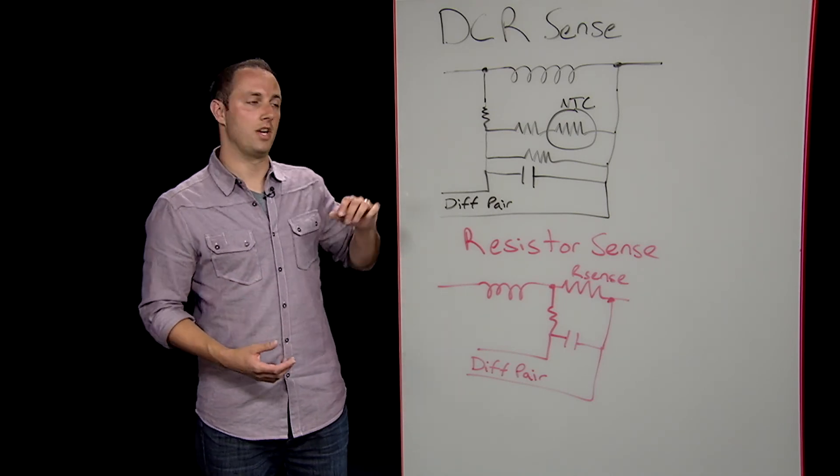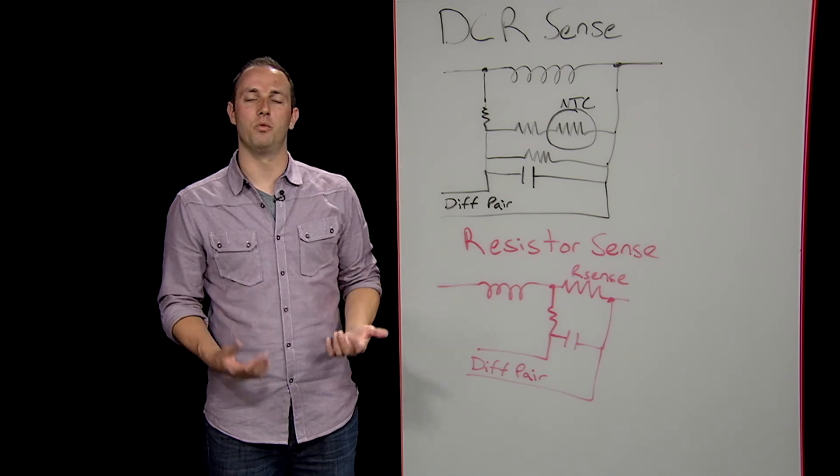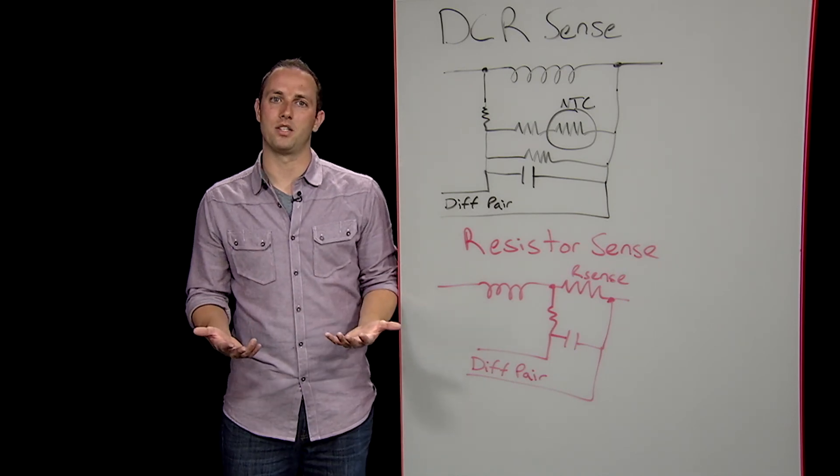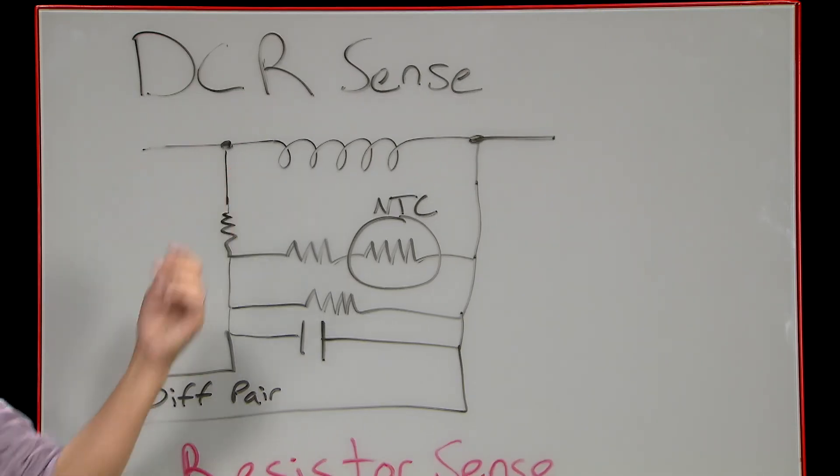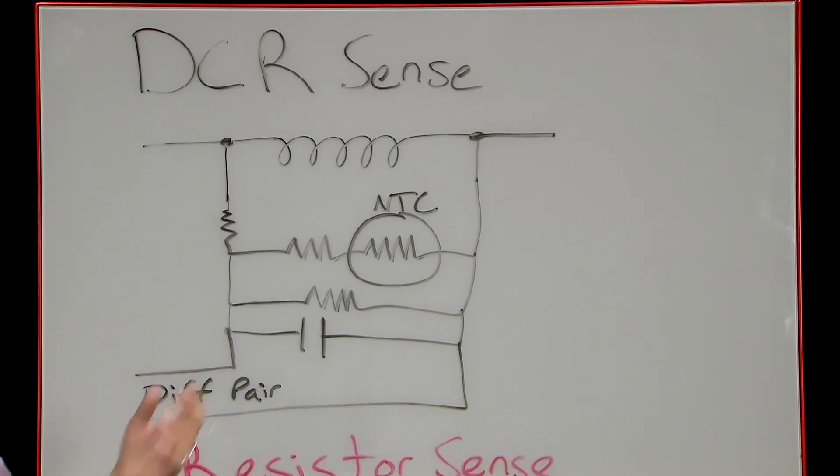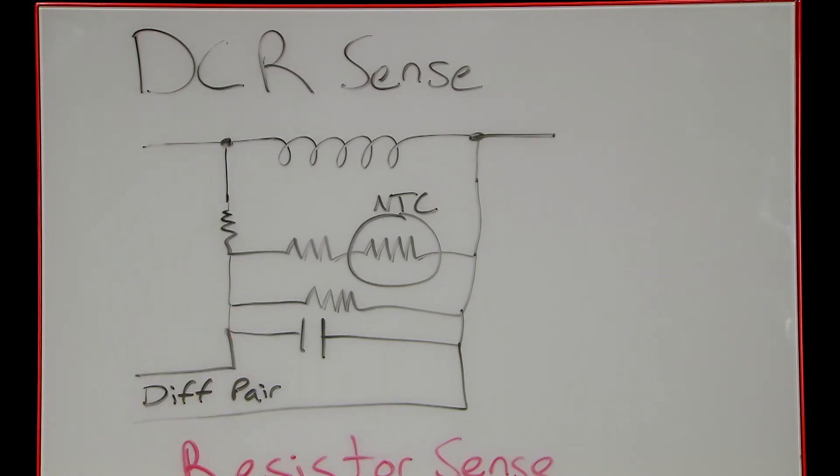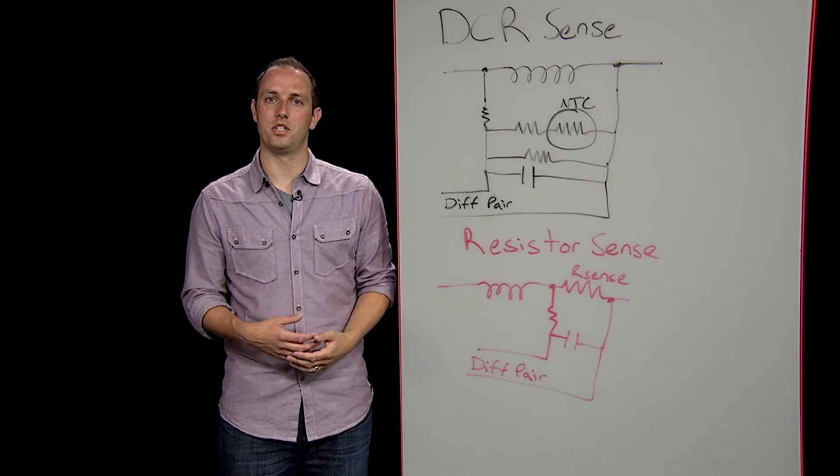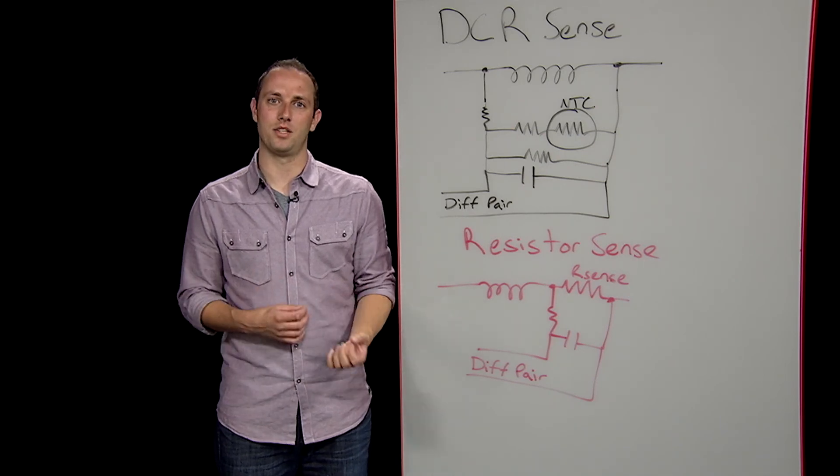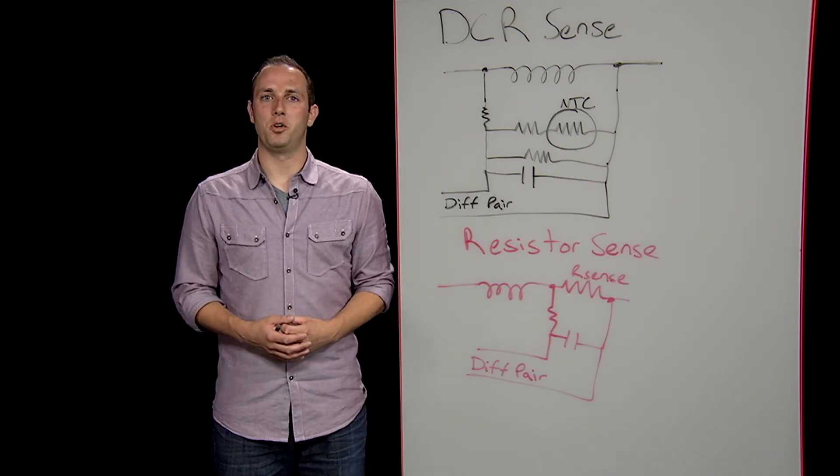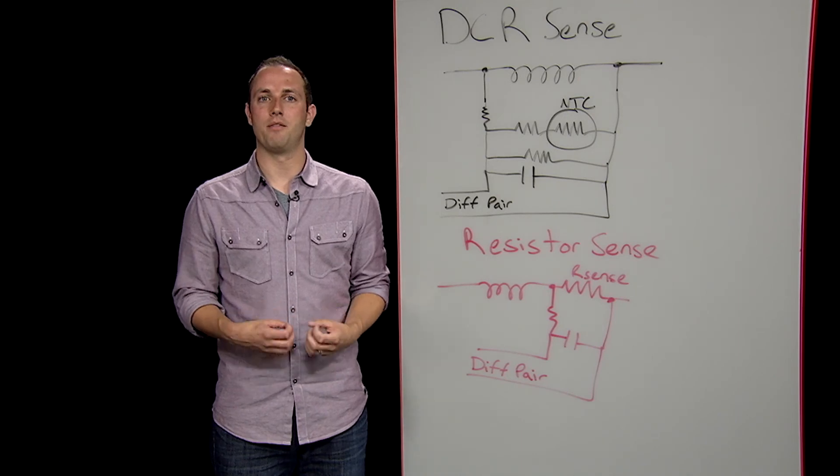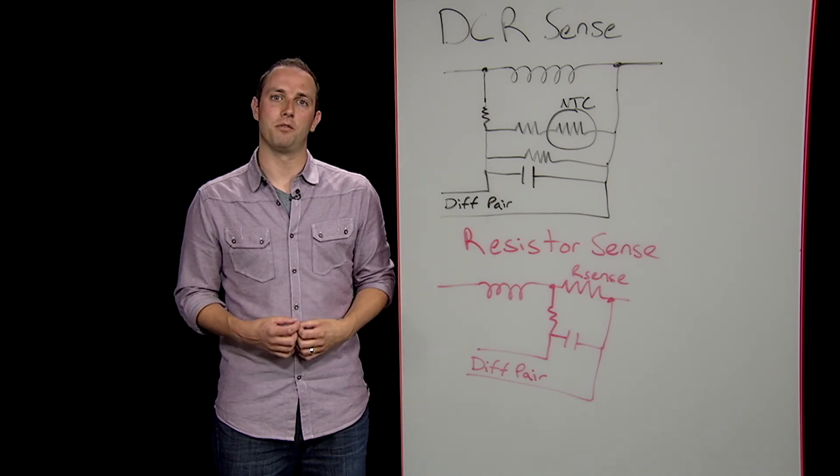DCR sensing requires that passive network contains an NTC thermistor to compensate for the positive temperature coefficient associated with the DCR of the inductor, which complicates the design somewhat. You also have to typically maintain a minimum DCR in order to have enough of a signal to accurately regulate the phase current.